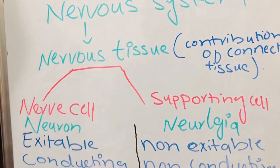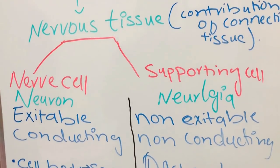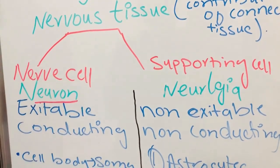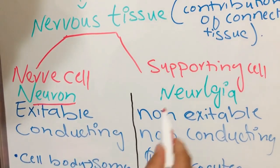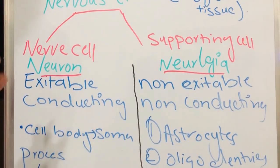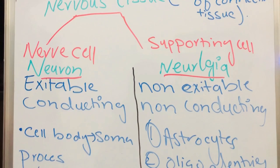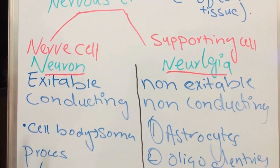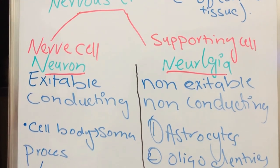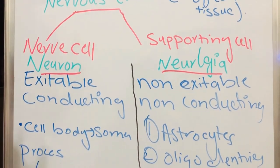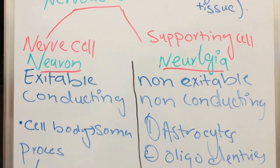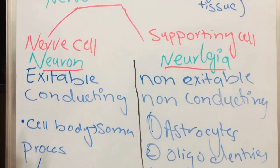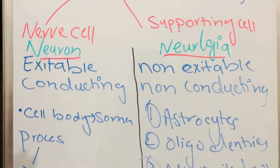In the nerve cell there is neuron. In our supporting cell there is neuroglia. These two cells are completely different from each other. Our nerve cells are excitable and have the ability of conducting. Our neuroglia cells are non-excitable and do not have ability to conduct. Neurons consist of two types of parts.